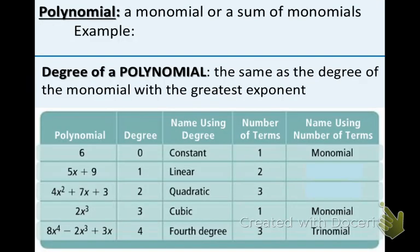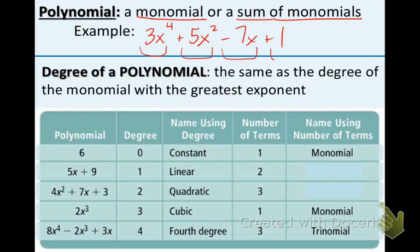We are ready to talk about what a polynomial is, now that we have talked about what monomials are. A polynomial is a monomial, or a sum of monomials. An example of this would be 3x to the fourth, plus 5x squared, minus 7x, plus 1. As you can see, we have 4 monomials there: 1, 2, 3, and 4. It doesn't have to be 4, that's just a random example.